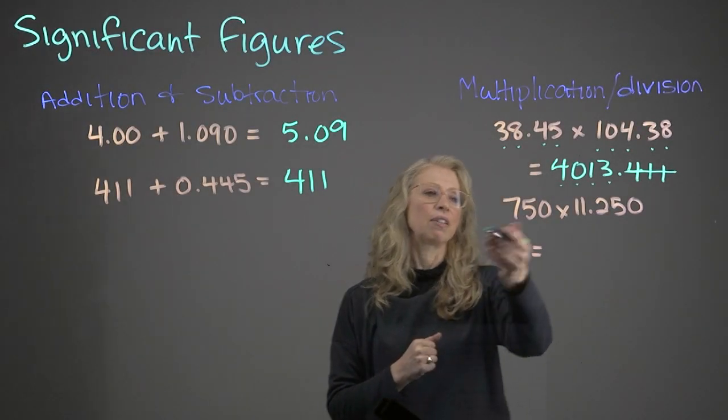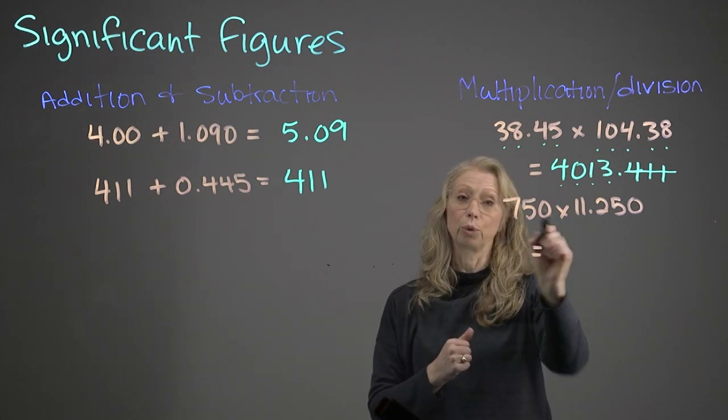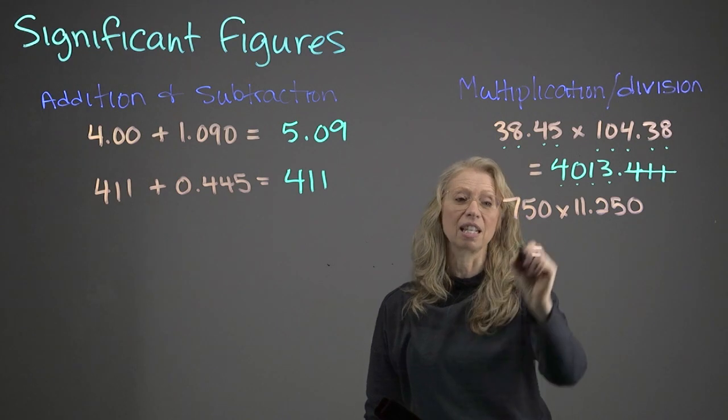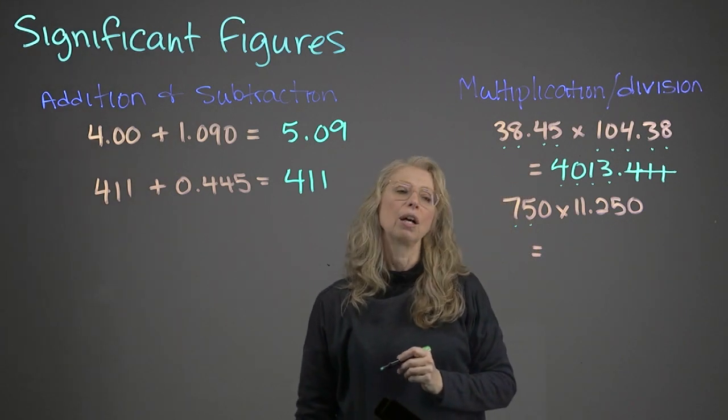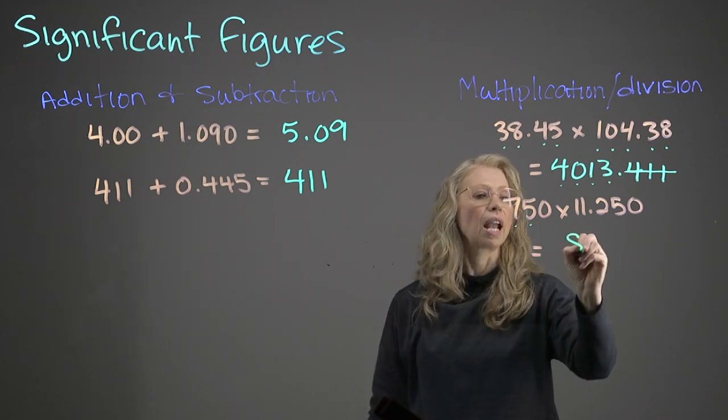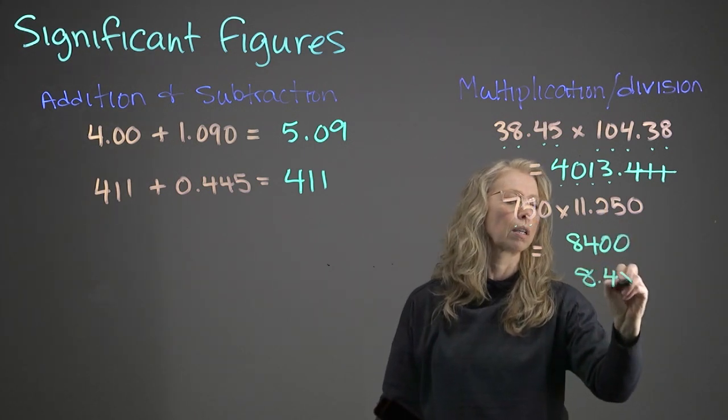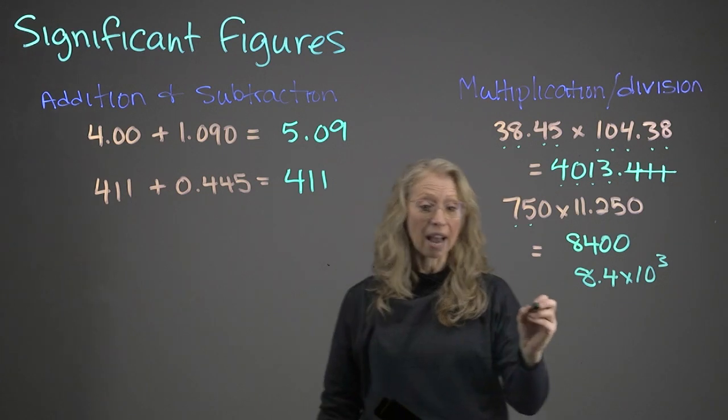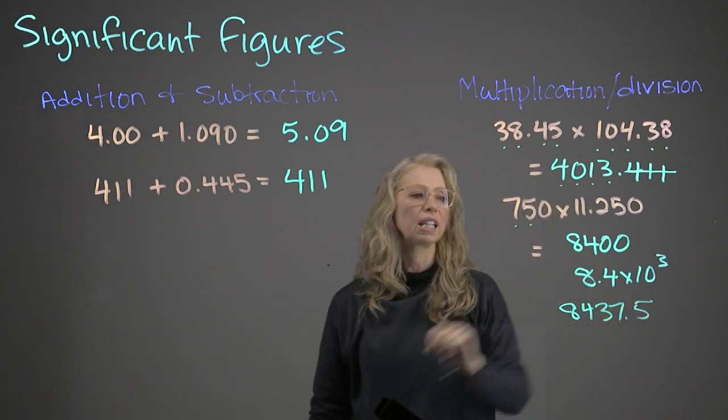Our next example, 750 times 11.250. Now, remember the rule around decimal places. This is a whole number. It does not have any decimal places. So how many sig figs is this? It is only 2. 1, 2. And this value has 5. How many does our answer require? Only 2. So our answer in this case would be 8400. Or we could say 8.4 times 10 to the 3. But if you throw this value into your calculator, you're going to have a value of 8,437.5. Why did I round it up to that? Because this value only has 2 sig figs.